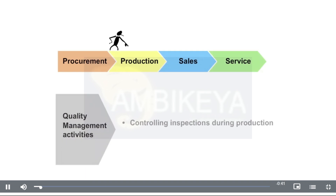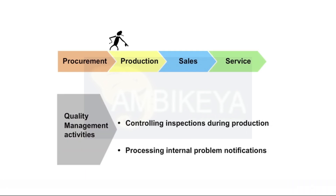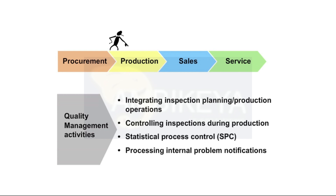In production, the SAP Application Quality Management provides you with important information about the current quality of the manufactured goods — i.e. Statistical Process Control — and enables you to use quality notifications, i.e. SAP Business Workflow Link, to implement corrective actions. SAP Application Quality Management Inspection Planning is integrated in the production planning functions. Inspection operations are included in the routing — i.e. production planning in discrete manufacturing — or in the master recipe, i.e. production planning in the process industry.